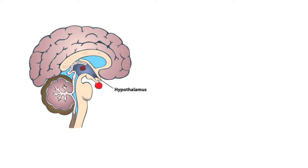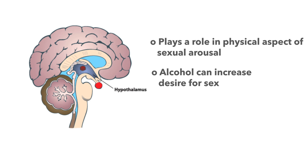The hypothalamus and pituitary gland play a role in the physical aspects of sexual arousal. While alcohol can decrease psychological inhibitions and increase the desire for sex, it can simultaneously suppress physiological functions resulting in temporary erectile dysfunction or low vaginal lubrication.